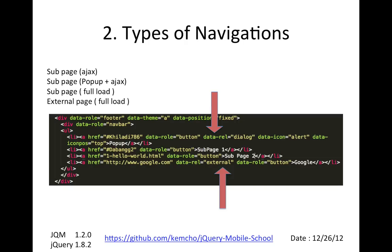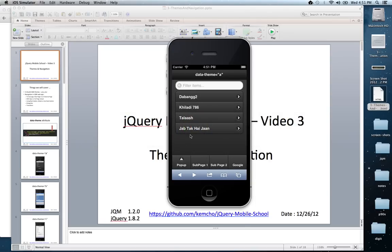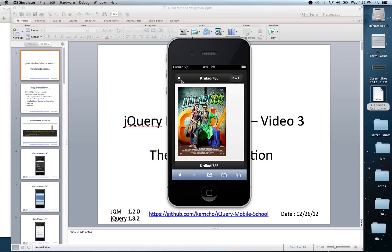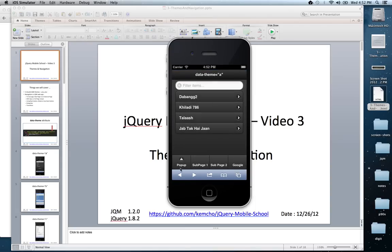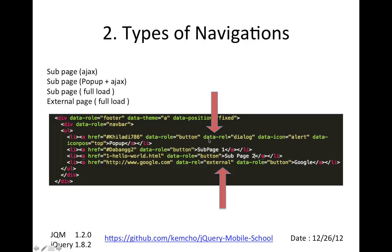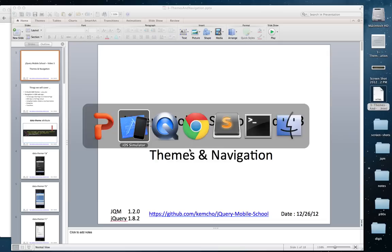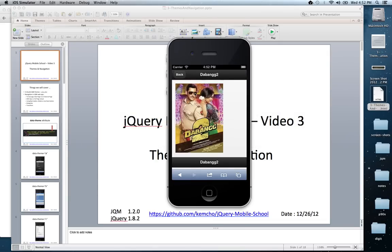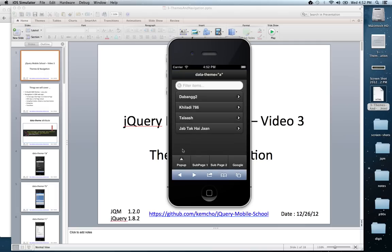There are different kinds of pages you can navigate to. The first is a dialog — a pop-up. Here's an example: you see a pop-up with an X button that does a reverse transition. That's a page within your page using a dialog pop-up, and it uses Ajax by default. The second is a sub-page within your page, but without a dialog box — that also uses Ajax. You navigate to the sub-page and can go back. The third is an external page whose code does not reside within your current page.